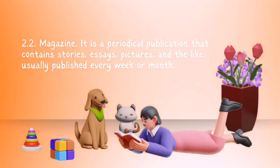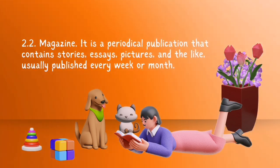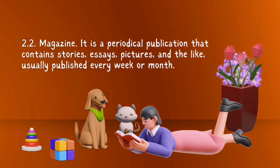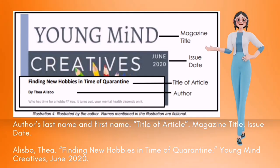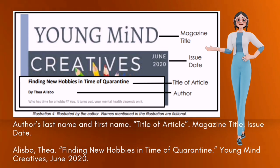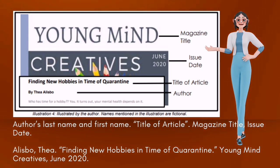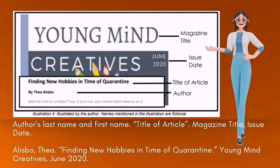Number two. Magazine — it is a periodical publication that contains stories, essays, pictures, and the like, usually published every week or month. The sample format of writing a magazine bibliography: author's last name and first name, title of article, magazine title, issue date. Example: Alispo, Thea. "Finding new hobbies in time of quarantine." Youngmind Creatives. June 2020.